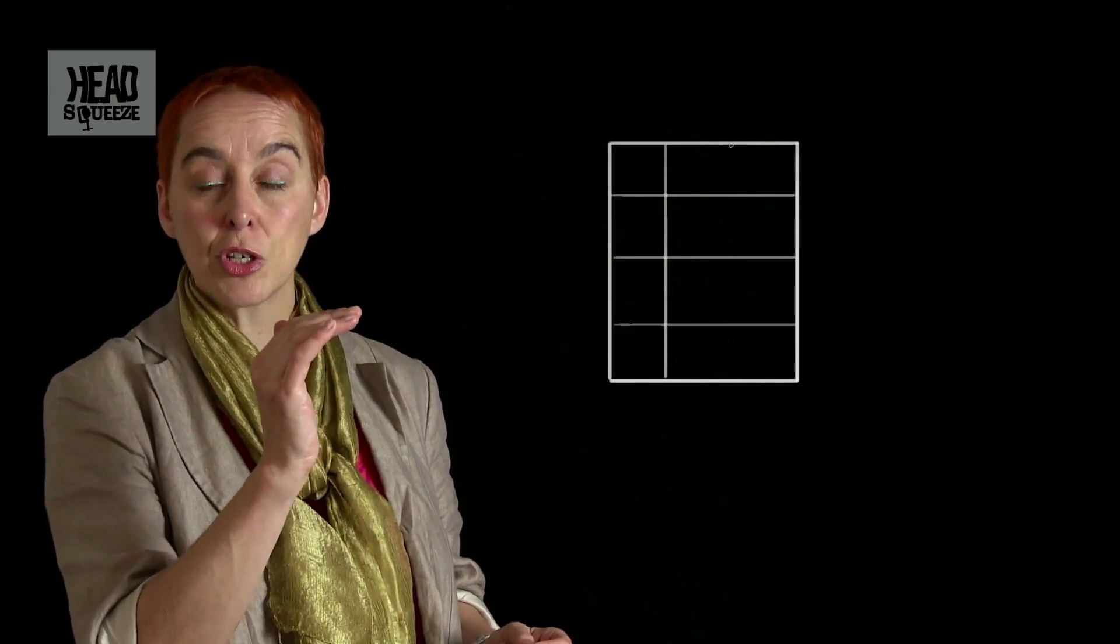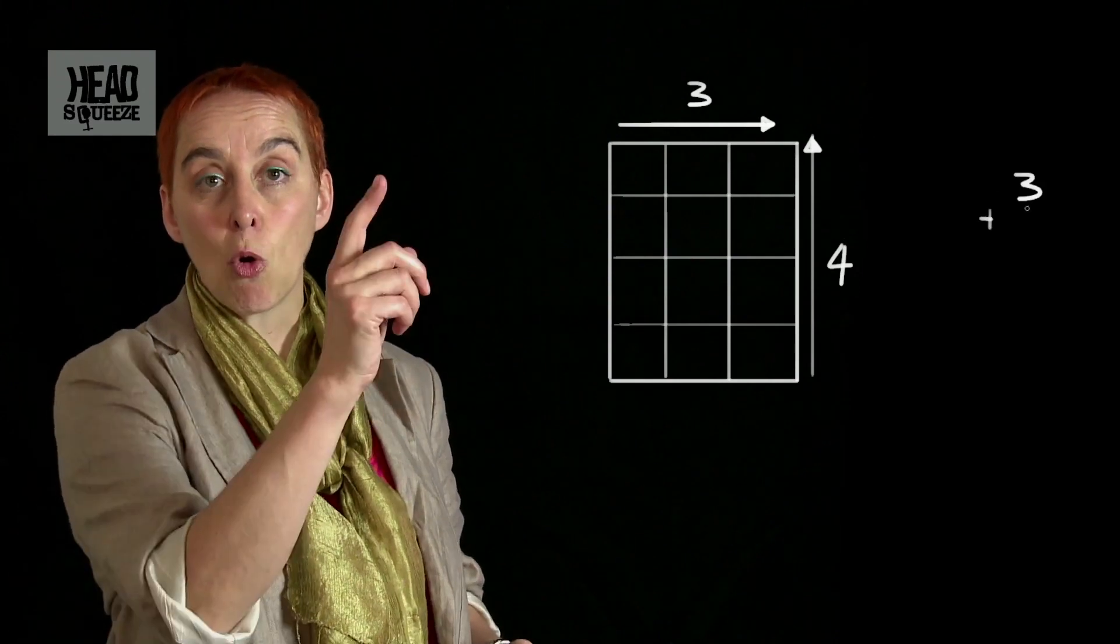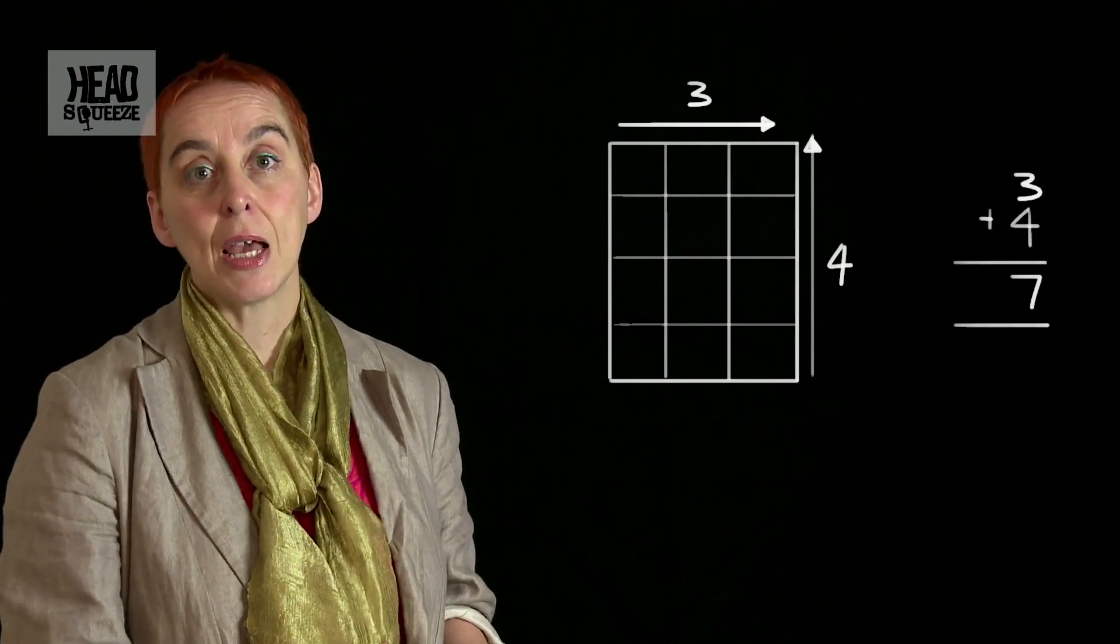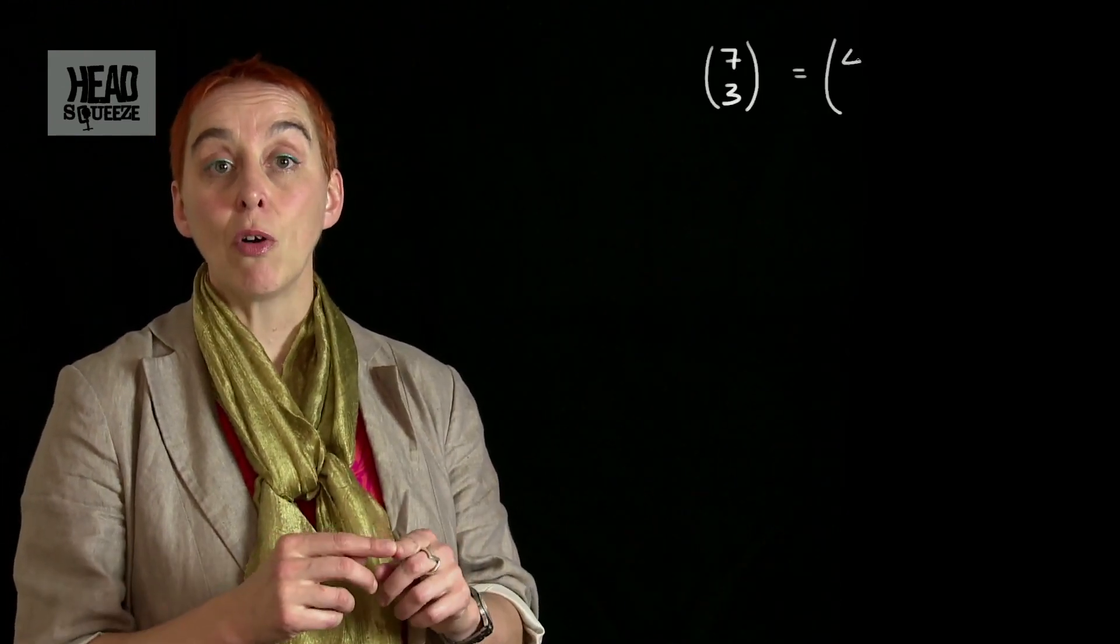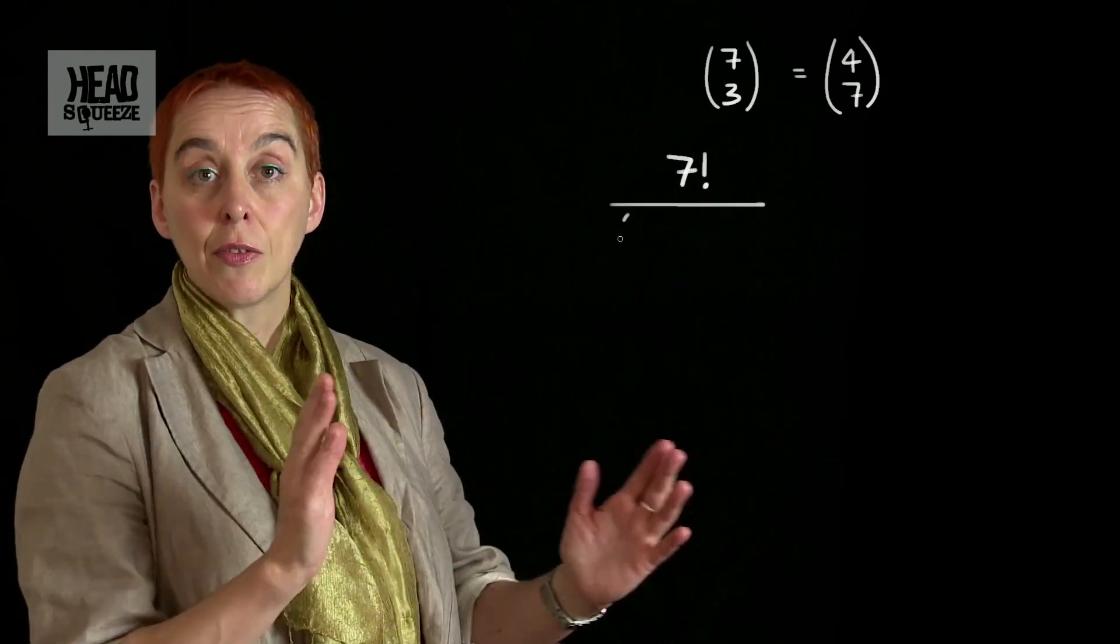All you have to do is work out the simplest route, in our case, the 3x4 field, that's 4 tent lengths plus 3 tent widths, giving us 7. Then, you work out the number of possible combinations of either eastward or northward routes out of 7.